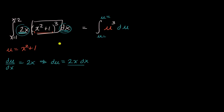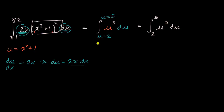When x is equal to one, u equals one squared plus one, which is two. When x is equal to two, u equals two squared plus one, which is four plus one, so u is equal to five. You won't typically see someone writing u equals two or u equals five explicitly; it's often just written as from two to five, since we're integrating with respect to u.